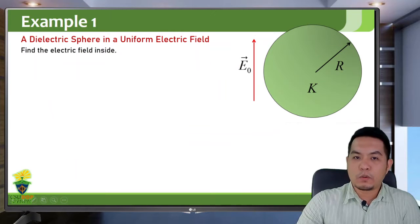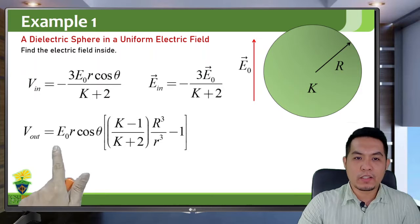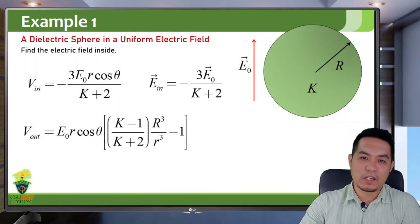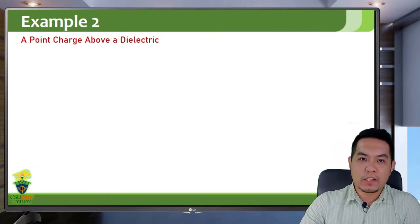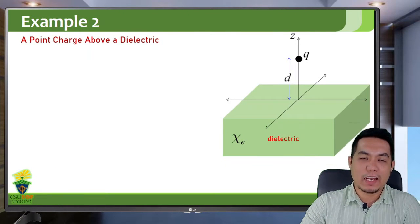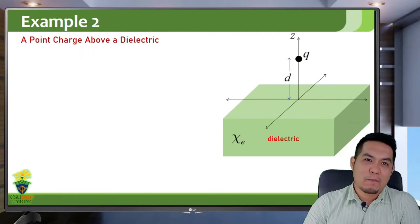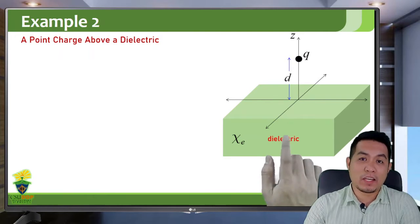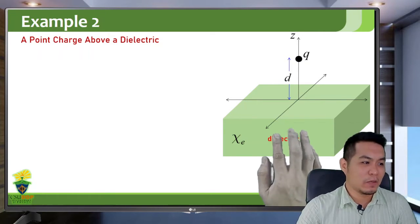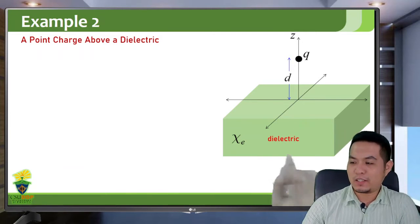Let's move to another example. If you're interested, the potential outside can also be written from the general solution. The second example is a point charge above a dielectric. We actually have a similar problem before, but instead of a dielectric we had a grounded conducting plane — and in that case we used the method of images. Similarly, we can use the method of images here.